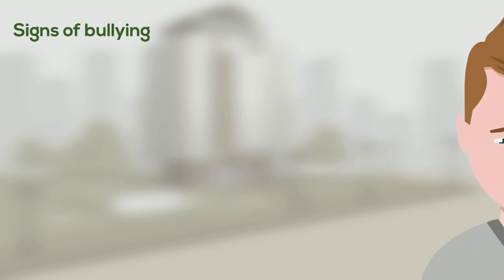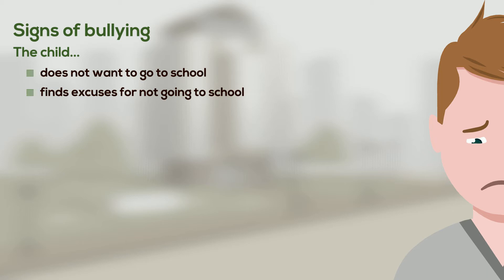Signs of bullying. Here are some signs that a child is being bullied. He or she does not want to go to school, finds excuses for not going to school — for example, feeling sick or being sick — or wants to go to school in a different way, for example, changing the route or being driven instead of catching a bus.